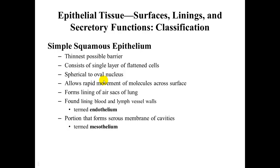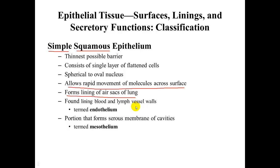The first specific kind is simple squamous epithelium — simple meaning one layer, squamous indicating the shape. It is the thinnest possible barrier, with a single layer of flattened cells and a spherical to oval nucleus. Its purpose is to allow rapid movement of molecules across the surface. It forms the lining of the air sacs of the lung (alveoli), lines blood and lymph vessel walls (termed the endothelium), and forms portions of the serous membranes (called the mesothelium).